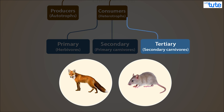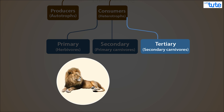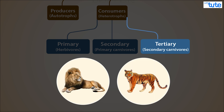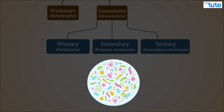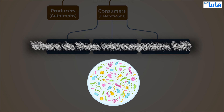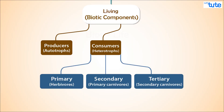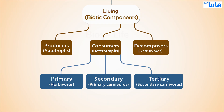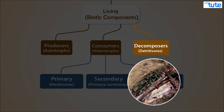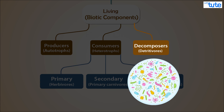The animals that feed on these secondary consumers — animals like lions and tigers — are called tertiary consumers or secondary carnivores. Now you might be wondering where microorganisms fall. They fall under a special category of consumers. Have you seen dead decaying matter? Who actually carries out the decomposition? Yes, they are these microorganisms, and are called decomposers or detritivores.